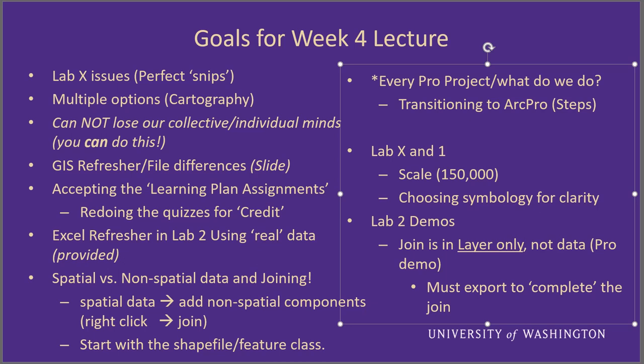The easiest way to remember how to join data is to always start with the shape — start with the feature class or shapefile, then add the non-spatial components using a right-click and join. The join is the layer only; it doesn't affect the actual data. The process includes, at the very end of the join, exporting the data, which physically attaches the data to the shape so the table data and shape data become one. You'll give that a new name so the data is available to use in other projects or maps.